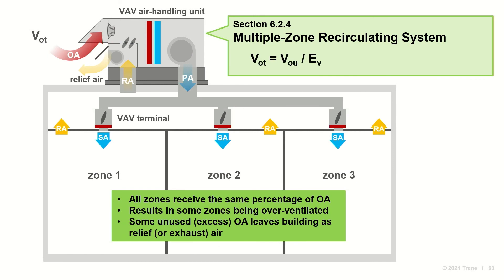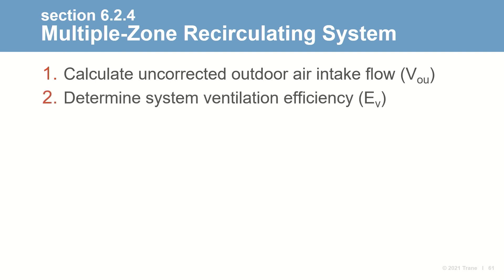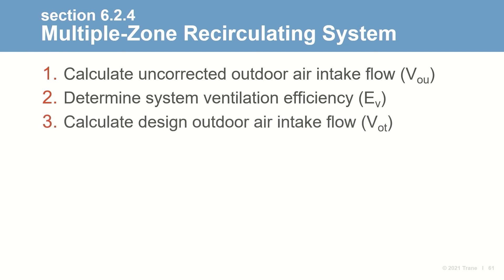To account for this, Standard 62 requires the designer to determine a System Ventilation Efficiency, E-sub-V, when calculating intake airflow for this type of system. There are three steps: first, calculate the uncorrected outdoor air intake flow V-sub-OU; second, determine the system ventilation efficiency; and third, calculate the design outdoor air intake flow V-sub-OT.